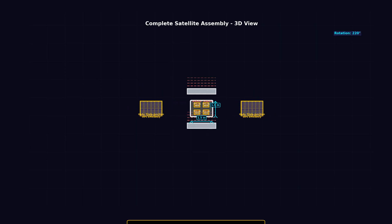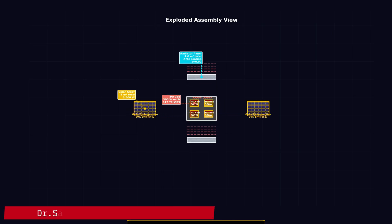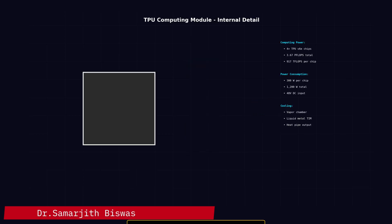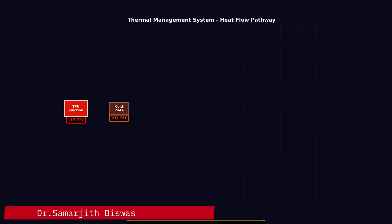But in space, you use radiative cooling. The heat flows through vapor chamber heat pipes to aluminum radiator panels. Those panels radiate infrared energy directly to deep space at 2.7 Kelvin. No moving parts, no water, no pumps - just physics.